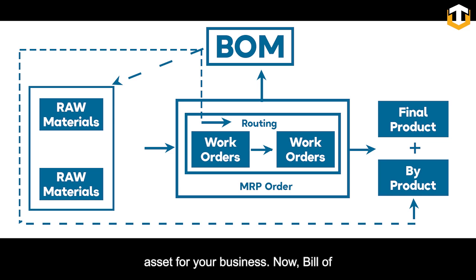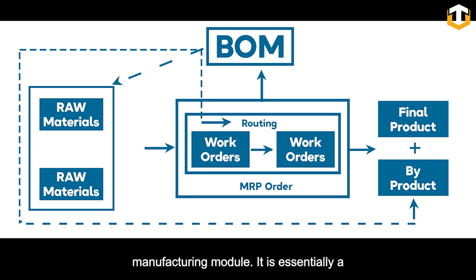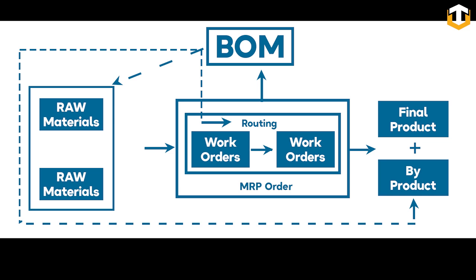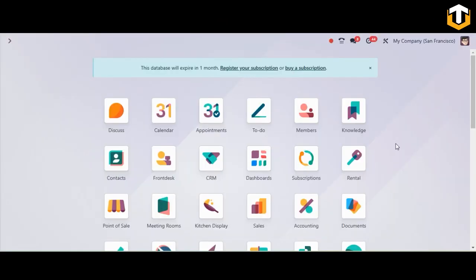A Bill of Material is a crucial component of the manufacturing module. It is essentially a list of all the raw materials, components, and assemblies needed to produce a specific product. To create a BOM, we need to navigate to the manufacturing module in our Odoo database.